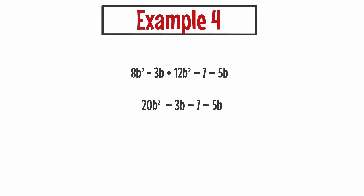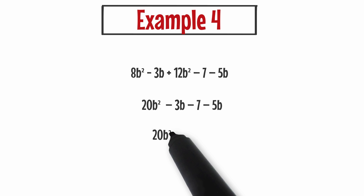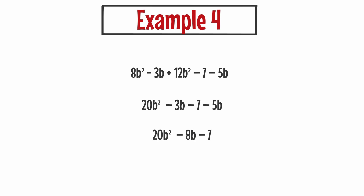Now I need to deal with my regular b's. I have a negative 3b and a negative 5b, or you can think of that as I need to subtract 3b and subtract 5b. After I solve that problem I end up with negative 8b. I have the expression 20b squared minus 8b, and then there's a whole number 7 with a subtraction sign in front of it, so it's a minus 7. So my final answer for example number 4 is 20b squared minus 8b minus 7.